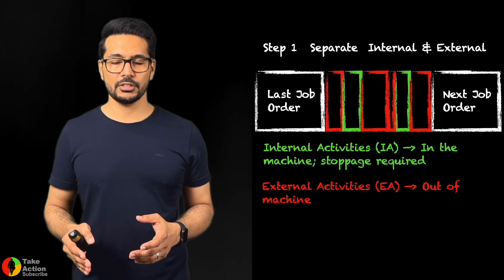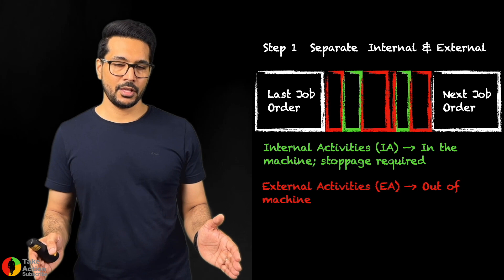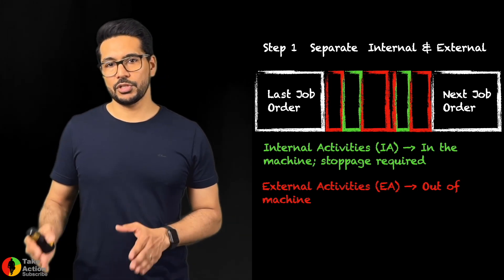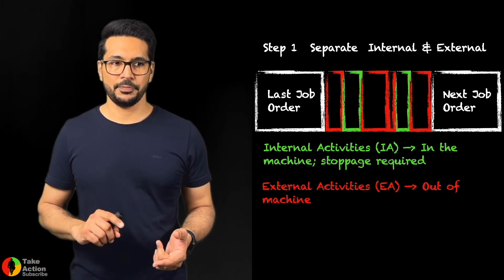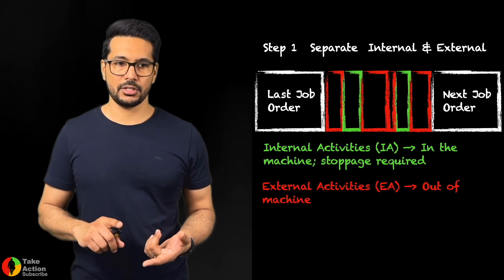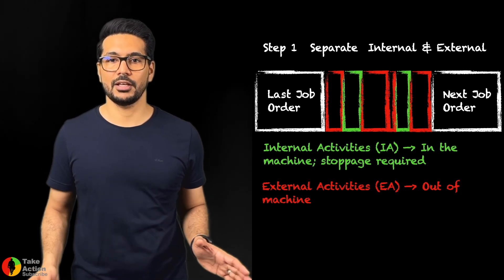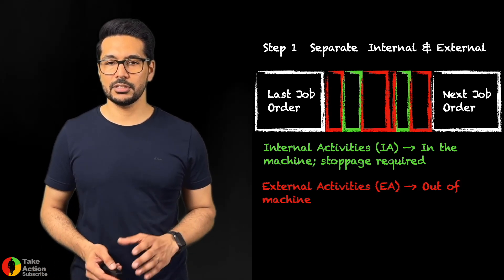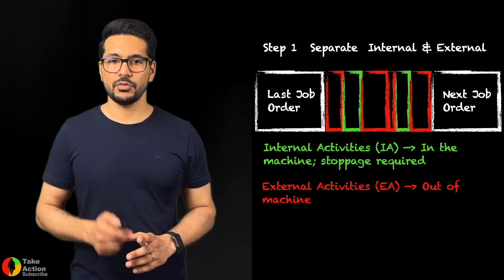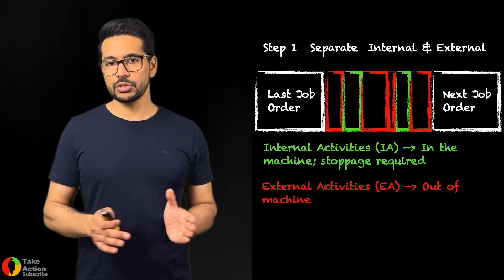All the activities which we are performing when the machine is stopped but are outside the machine—we are filling the job order number on the batch book, entering data in the ERP system, counting the parts, transporting the parts—everything else is considered to be external activity. Once we have categorized all the setup activities into these two categories...